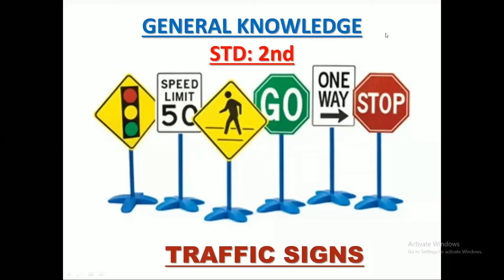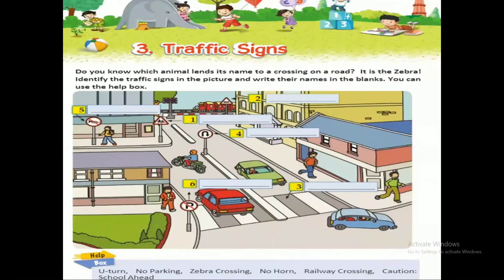This is our third chapter. We are skipping the second chapter for now. So everyone move to chapter number three, that is traffic signs, and open your page number 243 in your Fusion Sem 2 textbook. Now everyone come to the exercise of this chapter. First we need to understand about the traffic sign.